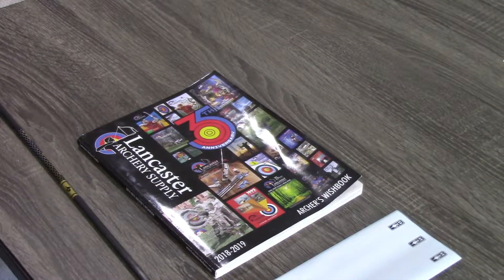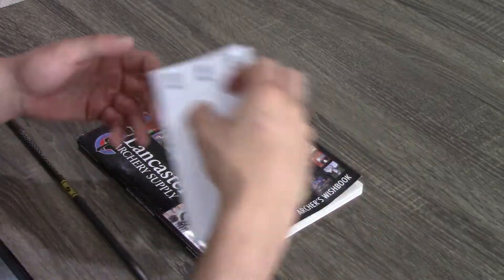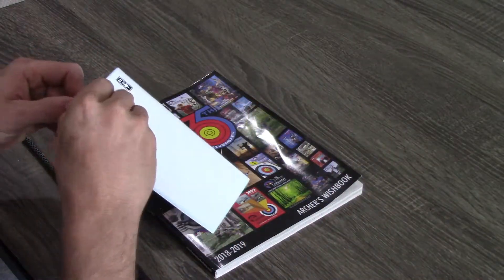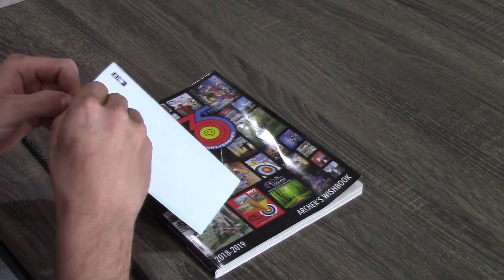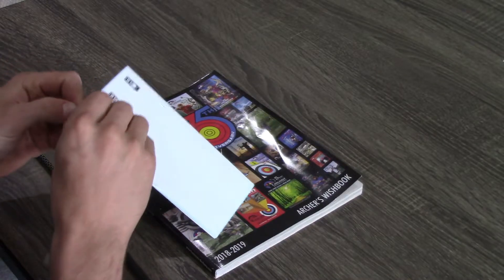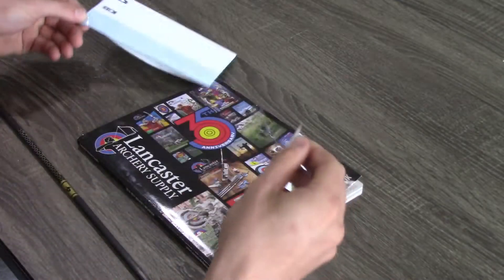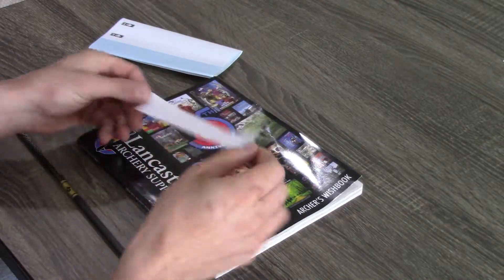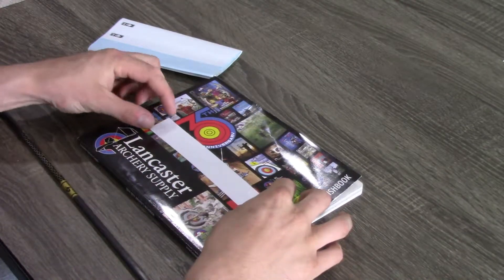To install the wraps, you can use a mouse pad like many people use, or if you don't have a mouse pad, you can just use a magazine. I've got the Lancaster Archery Supply Magazine here. So I'm just going to peel the wrap off the backing, set it on the top of the magazine.